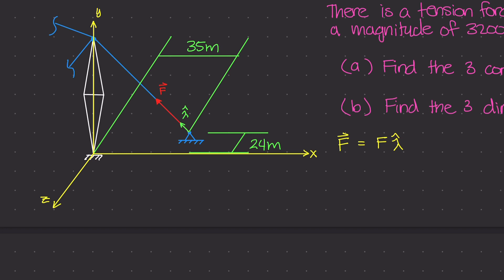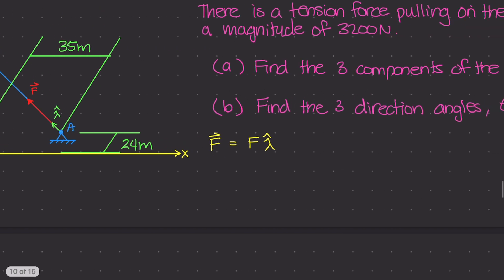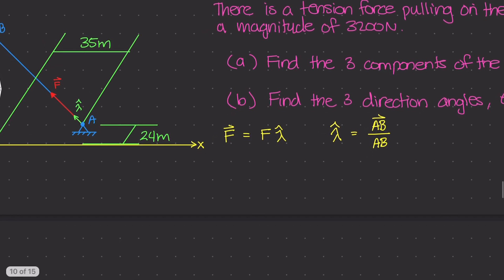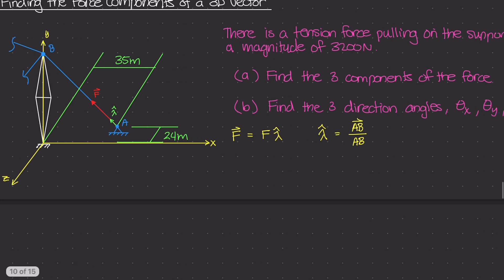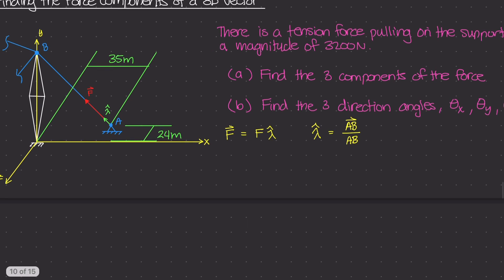I'll call the support point A and the top of the tower point B. Lambda is then the vector AB divided by the magnitude of AB. With the coordinate system at the base of the tower, the origin (0, 0, 0) is right there. Now I need to identify the coordinates of those two points.